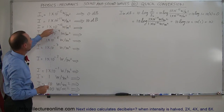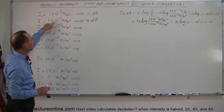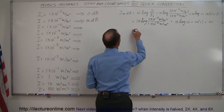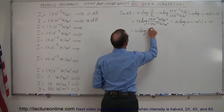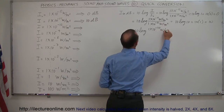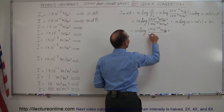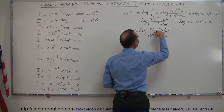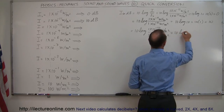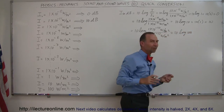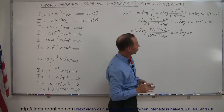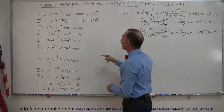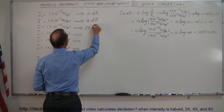What about 1×10⁻¹⁰, which is 10 times bigger than the previous and 100 times more intense than the threshold? That gives 10×log(1×10⁻¹⁰ / 1×10⁻¹²) = 10×log(100). The log of 100 — with two zeros — is equal to 2, so that's 10×2 = 20. This is equal to 20 decibels.